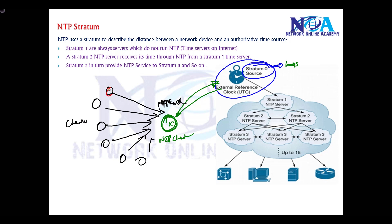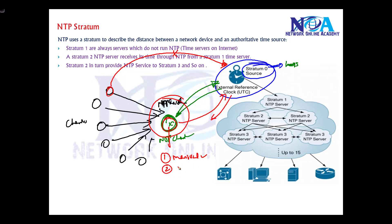We could configure every device to contact the external server, but practically that's not scalable — you don't want each and every device contacting the external clock. That's why we configure our own internal server and either manually set the time on it, or configure it to contact the external clock to synchronize. So this device acts as a client to the external clock and as a server to all internal clients.